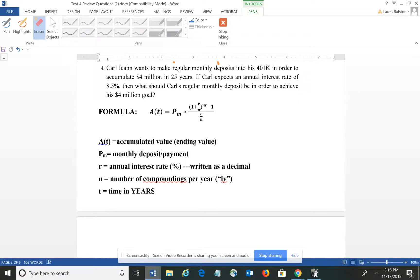This is a continuation of the test review questions. We're picking up with question number four, which reads: Carl Icahn wants to make regular monthly deposits into his 401k in order to accumulate $4 million in 25 years. If Carl expects an annual interest rate of 8.5 percent...